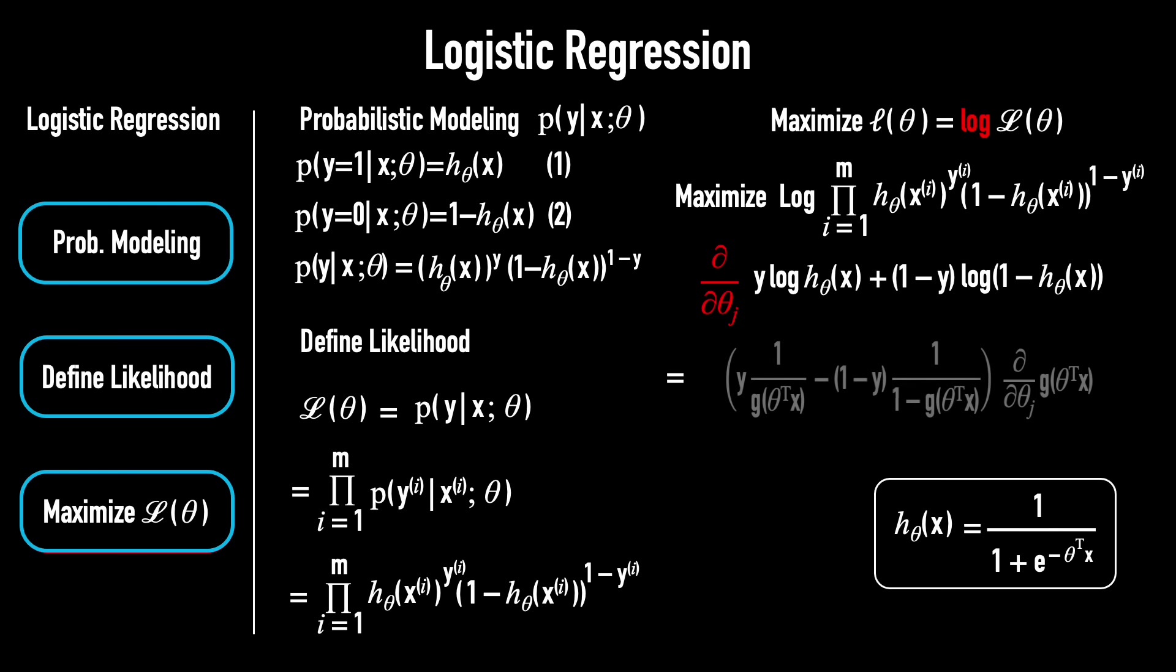The derivative of the log likelihood equals this. Expanding the derivative at the end of this expression, and then simplifying, the result becomes (y - hθ(x)) × xⱼ. And this gives us the update rule: θⱼ = θⱼ + α(y - hθ(x))xⱼ.